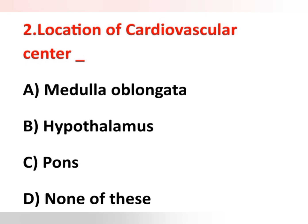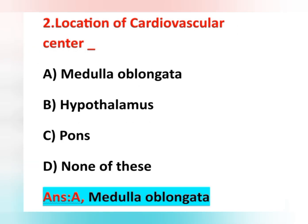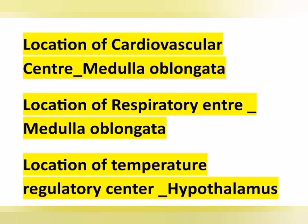Second question: location of cardiovascular center is? Options are: option A, medulla oblongata; option B, hypothalamus; option C, pons; option D, none of these. The correct answer is option A, medulla oblongata. The cardiovascular center is located in the medulla oblongata. Also, the location of the respiratory center is medulla oblongata.